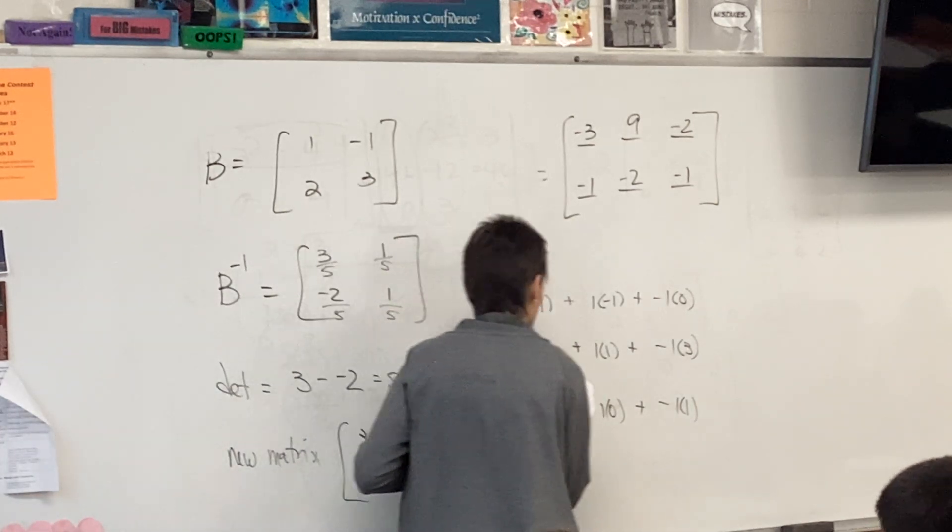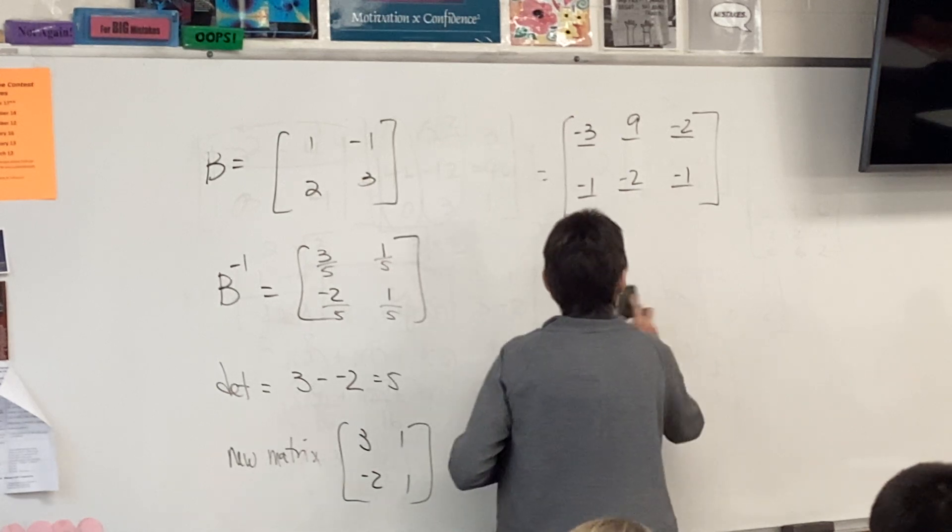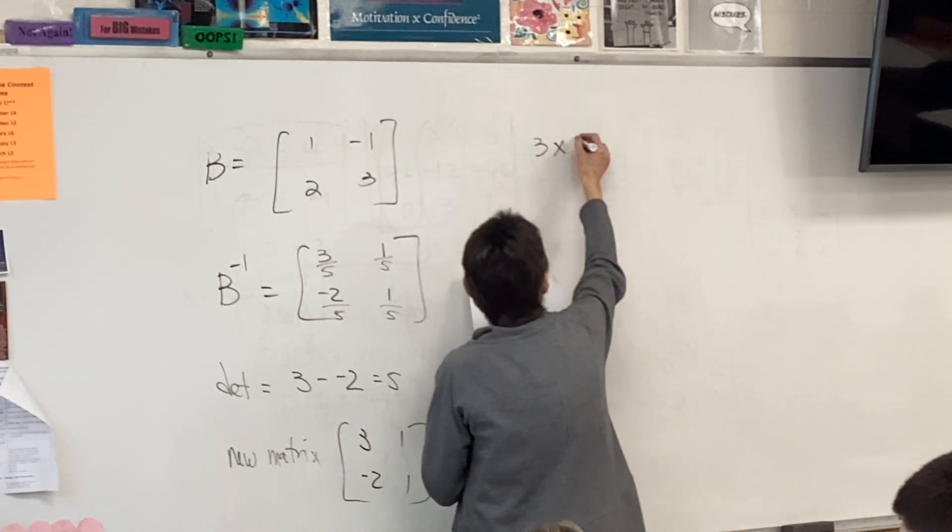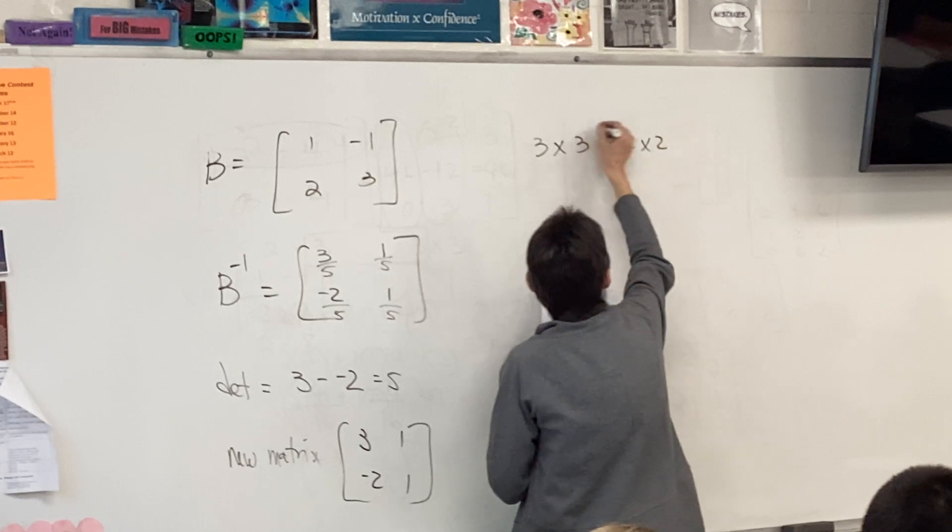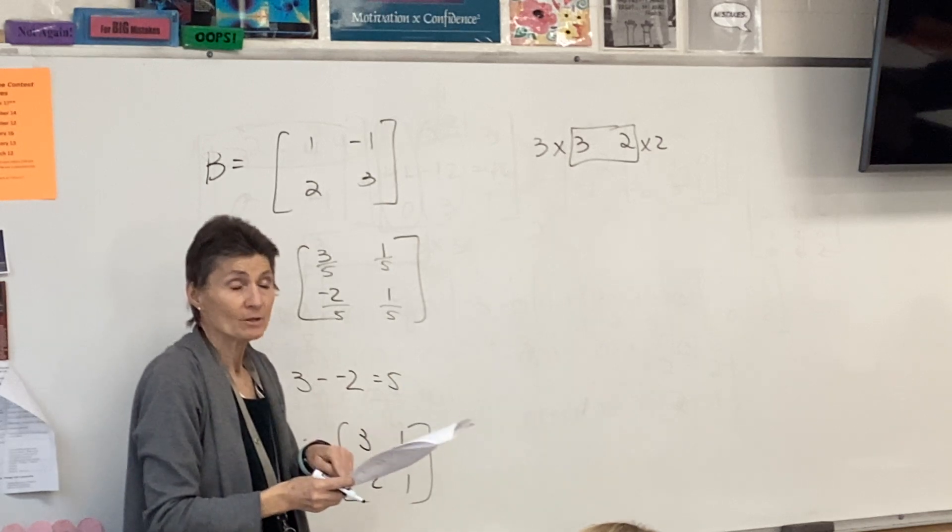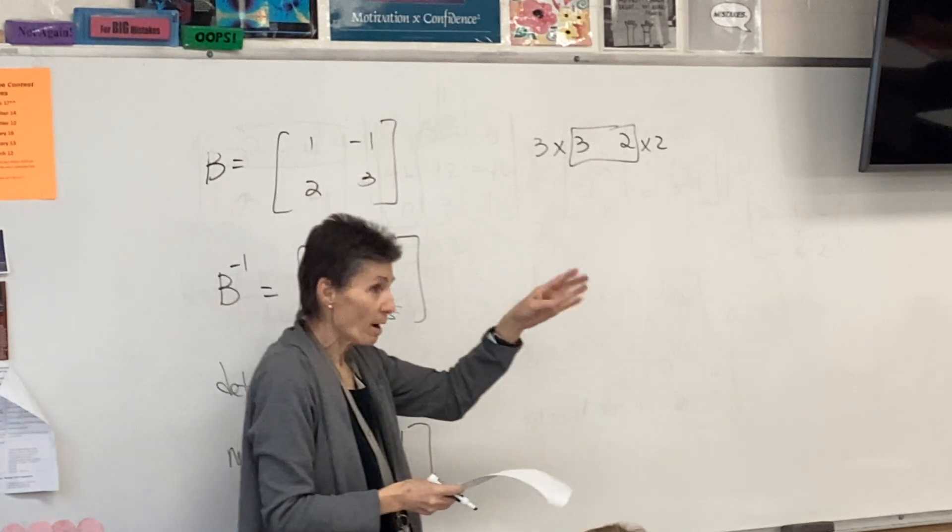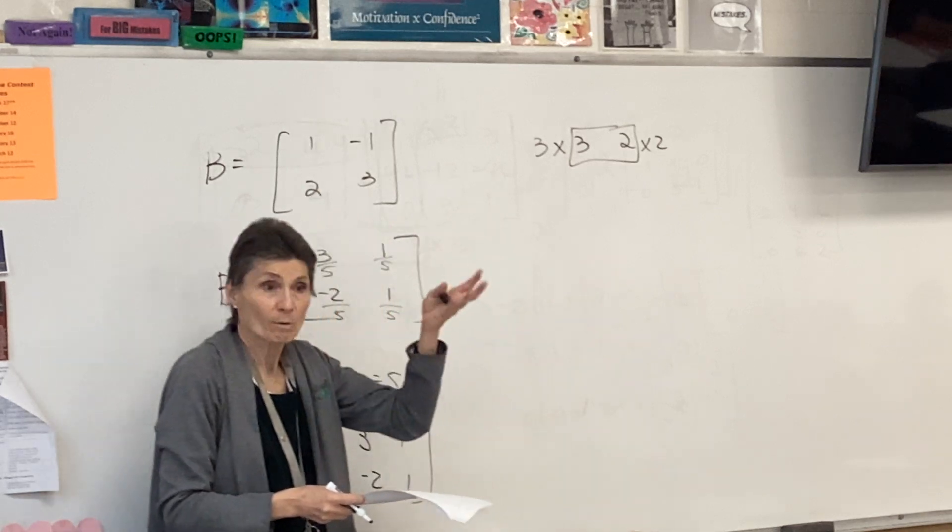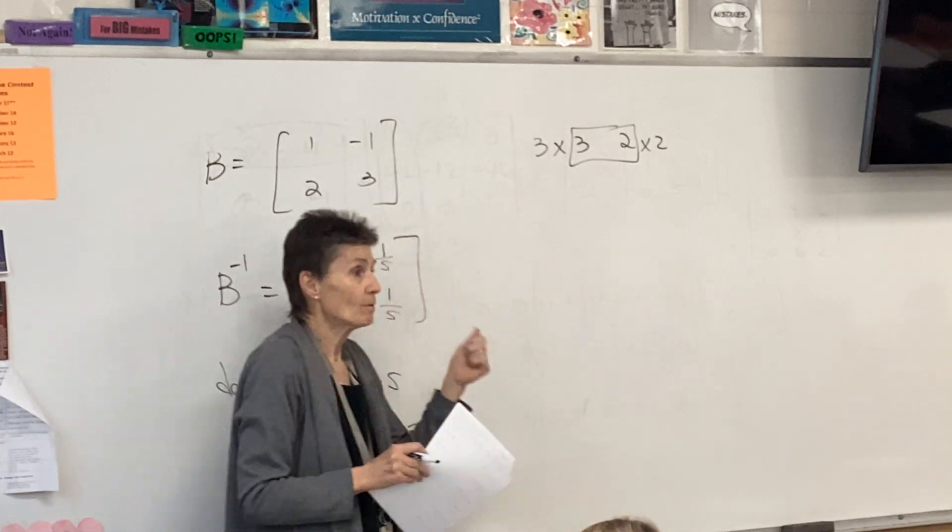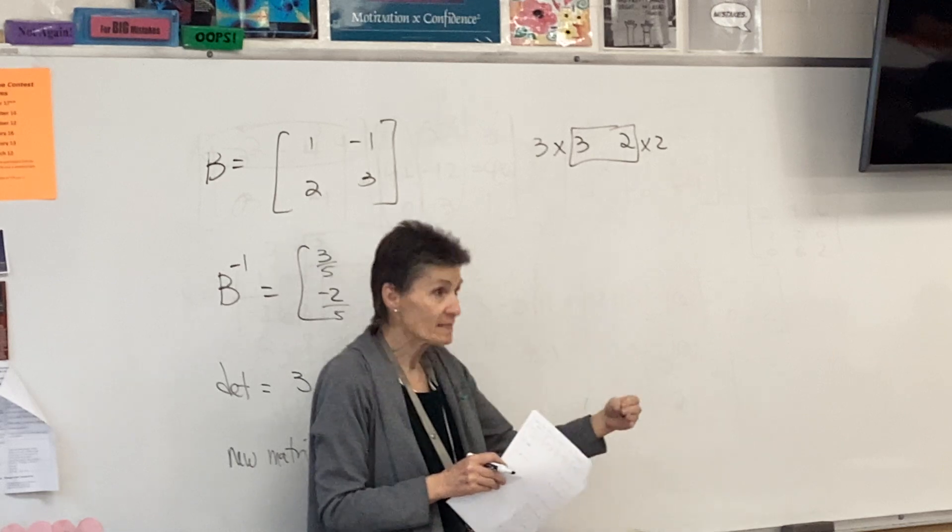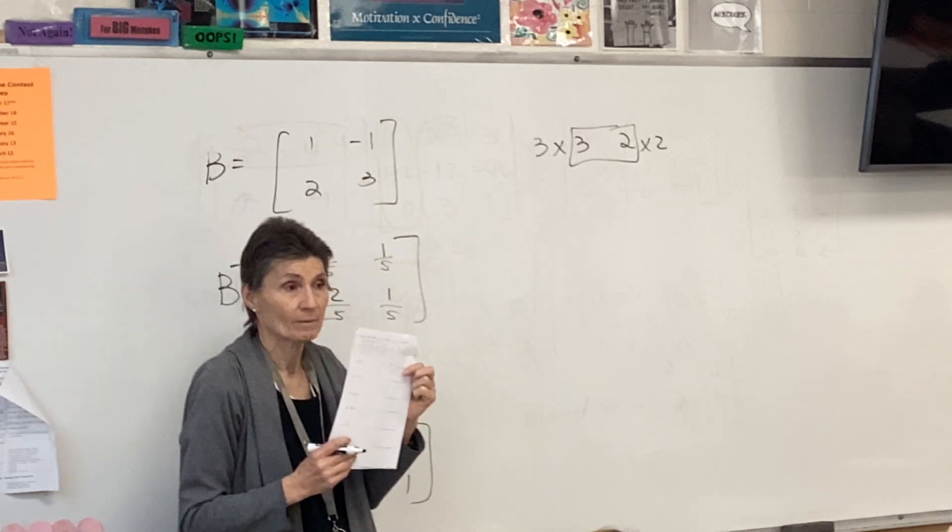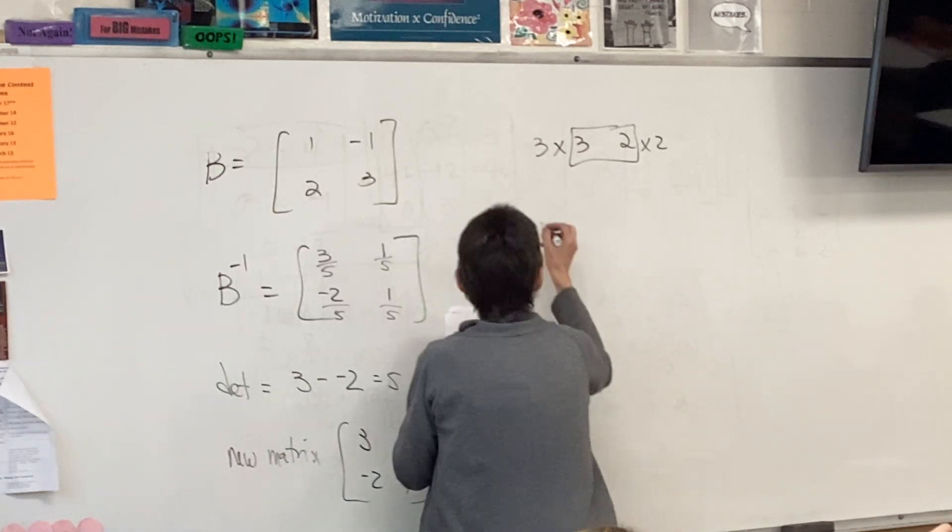A times C. Can't do it because the dimensions of A are 3 by 3, and the dimensions of C are 2 by 2, and these two do not match. So that is another can't do. When we took the quiz over this, did we have problems that were no answer? On your test, there will be problems that are no answer. All right, so you know. So far, what's our test look like? We have a page of solving systems—substitution, elimination, Cramer's rule. And then we have a page of all this matrix stuff.